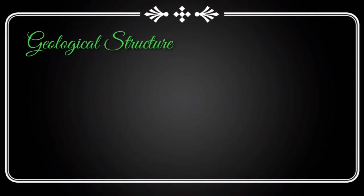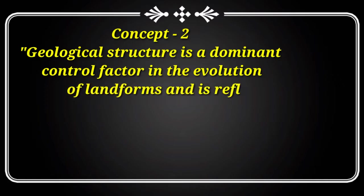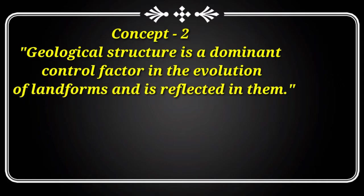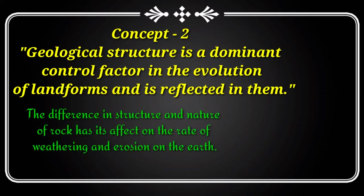The second fundamental concept is geological structure. Geological structure is a dominant control factor in the evolution of landforms and is reflected in them. Structure and process are the two fundamental factors. Structure, along with types of folding of rocks, also refers to the hardness, permeability, and chemical properties of rocks. The difference in structure and nature of rocks affects the rate of weathering and erosion, and climatic conditions such as temperature, precipitation, soil, and humidity also affect the rate of process. The permeability of rocks depends upon joints and bedding planes.